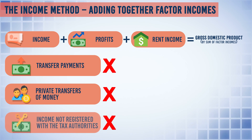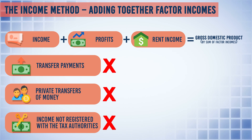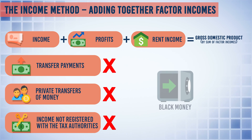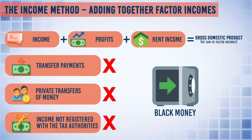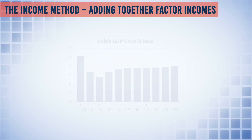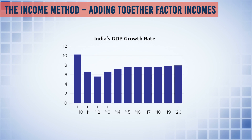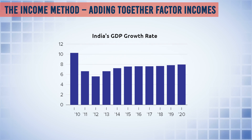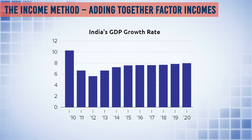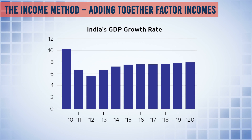A major issue is incomes not registered with tax authorities. Every year, billions of rupees worth of activity is not declared to the tax authorities — this is known as the shadow economy, otherwise known as black money. The published figures for GDP by factor incomes will be inaccurate because much of this activity is not officially recorded.